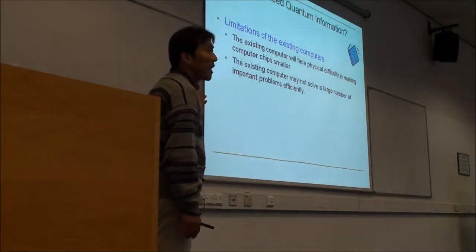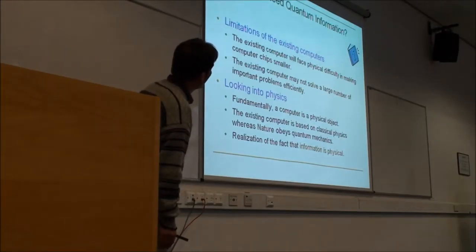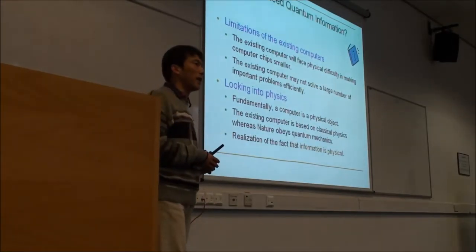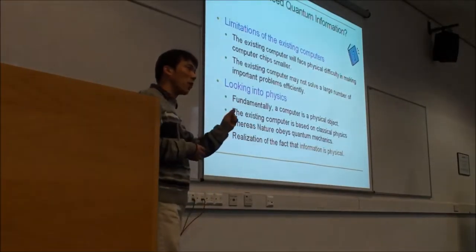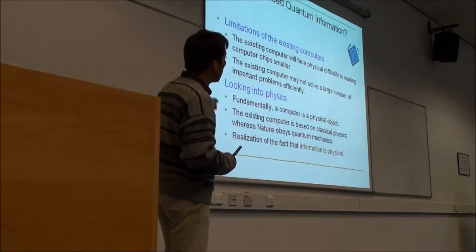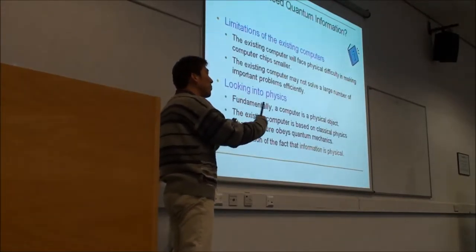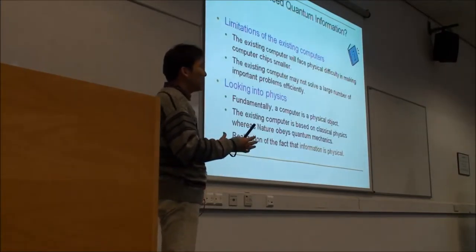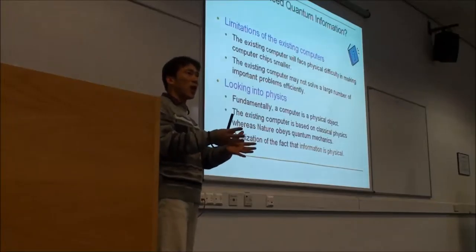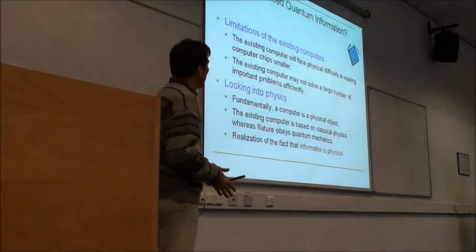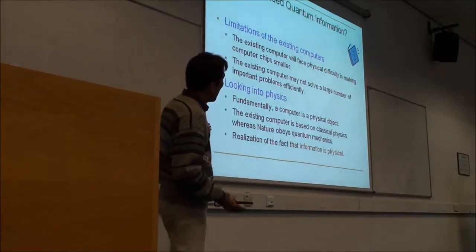Why do we need quantum information? Because there is a limitation in the current quantum computer technologies. Every year, computer makers are making the computer chips smaller and smaller. But there is a physical limit after which we can't make the chips smaller. We have tons of problems that should be solved but not efficiently solved yet, so we have to make the computer faster.